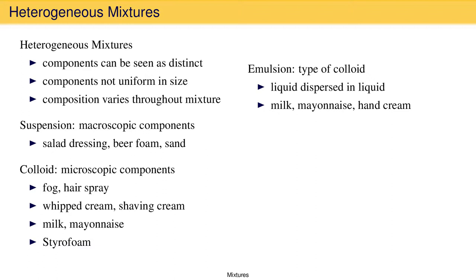As we have already seen, colloids can consist of liquids dispersed in gas, gas dispersed in liquid, liquid dispersed in liquid, and gas dispersed in solid. Emulsions are just one type of colloid, and colloids are just one type of heterogeneous mixture, and heterogeneous mixtures are just one type of mixture.